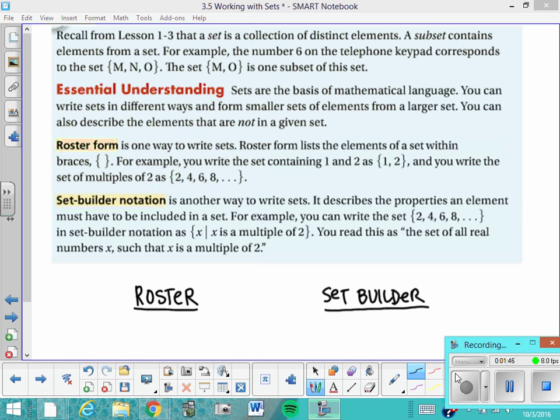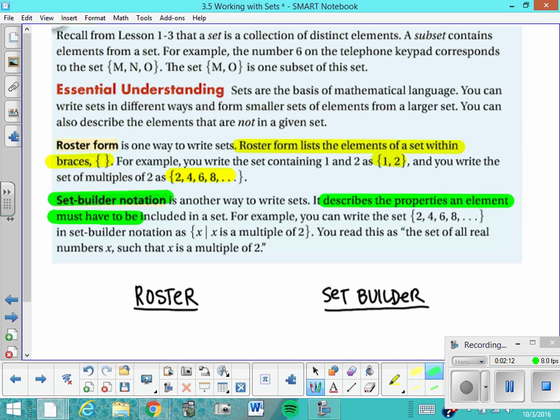Roster form is one way to write sets. Roster form lists the elements of a set within braces. Here's an example of roster form and another example of roster form. And then there's set builder notation. Set builder notation is another way to write sets, and it describes the properties an element must have to be included in the set. Here's an example. There's the example of that same set from above written in set builder notation.